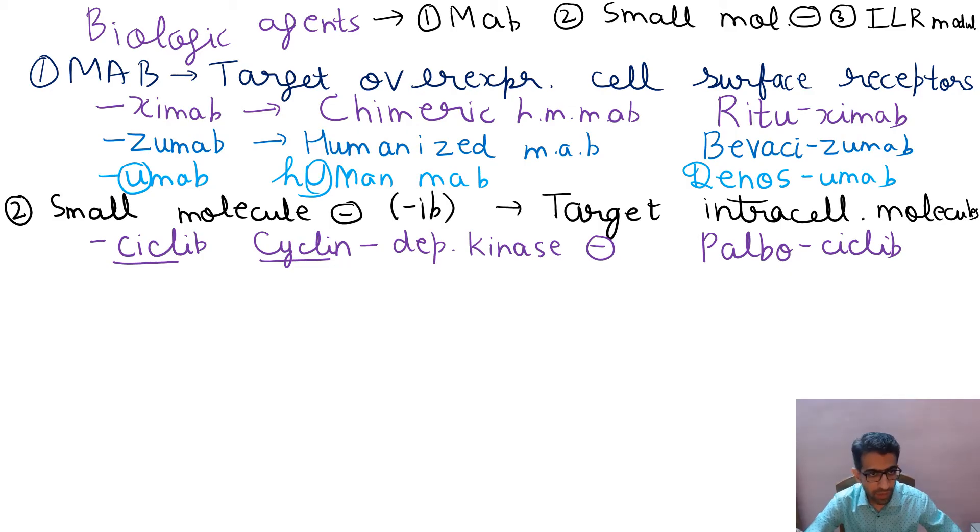Then we have coxib. Cox-2 is a small molecule. Cox stands for cyclooxygenase cox-2 inhibitor. Example celecoxib, rofecoxib, etoricoxib, and all the coxibs that you know of. These are selective cox-2 inhibitors.